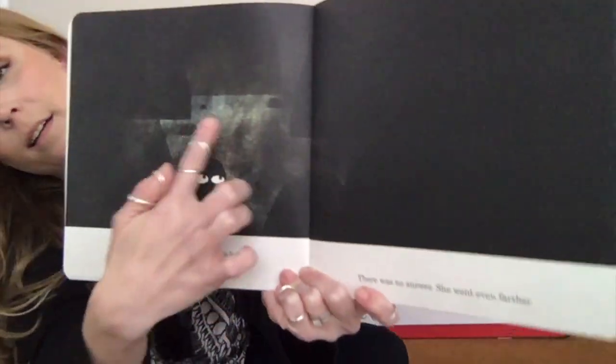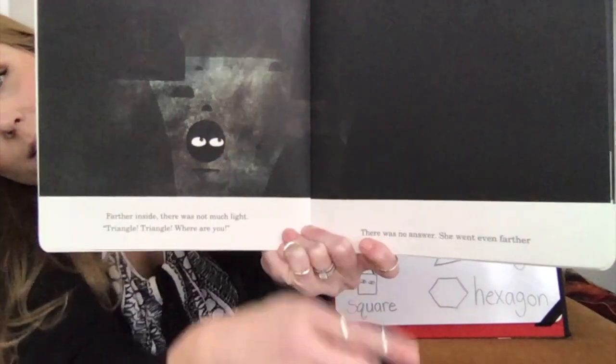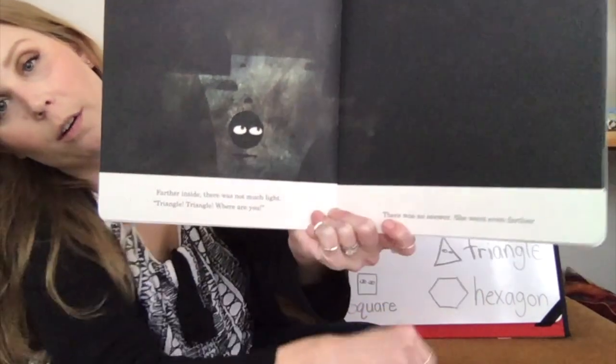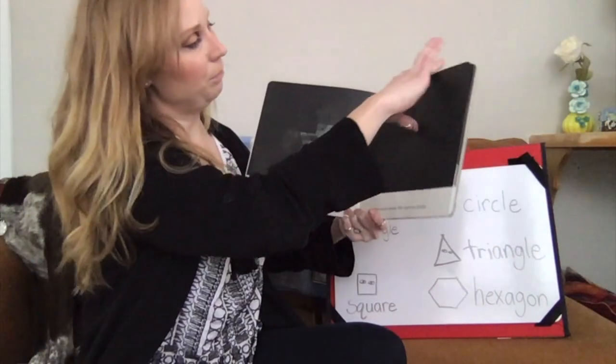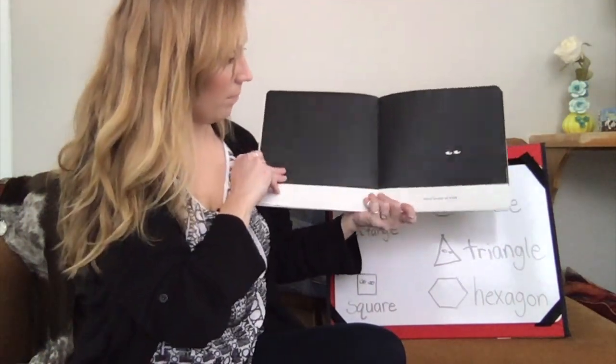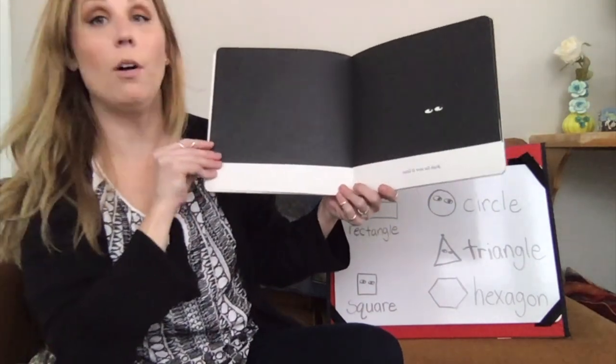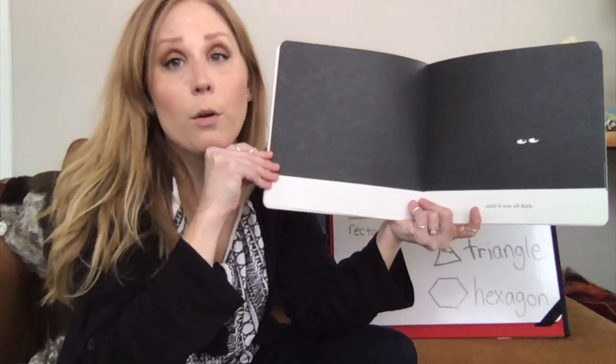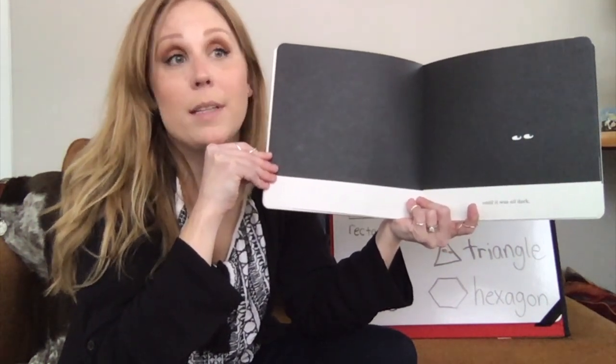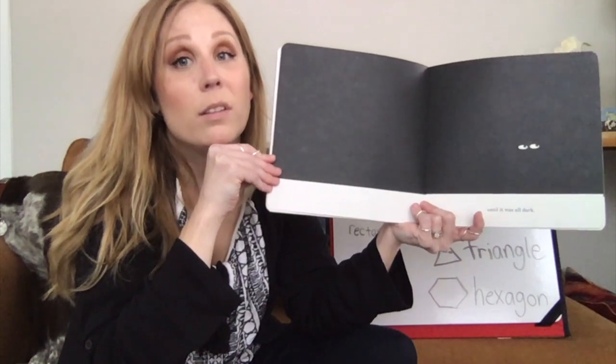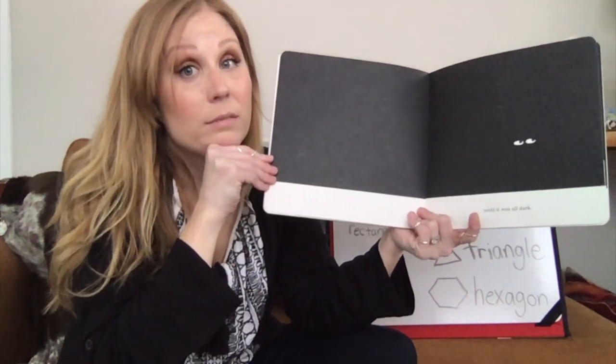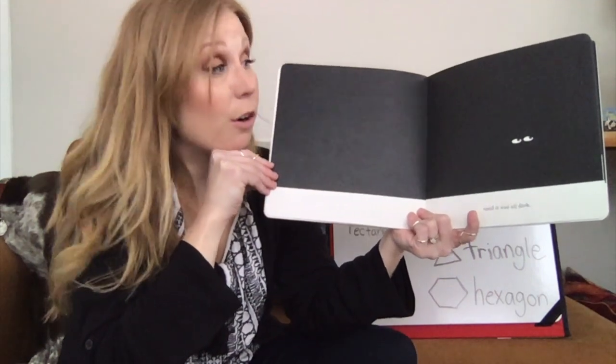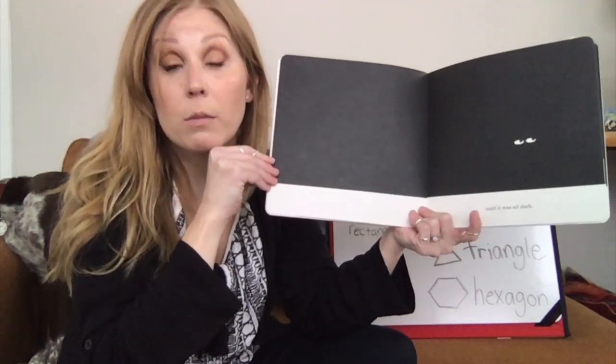You can see much lighter. She's getting deeper and deeper in to the cave. It's darker over here. Until it was all dark. I wonder, how do you think Circle is feeling right now? I know that she made the rule that they shouldn't go inside of the waterfall. It's really dark in there. I would feel maybe scared or nervous, worried. Where is my friend?